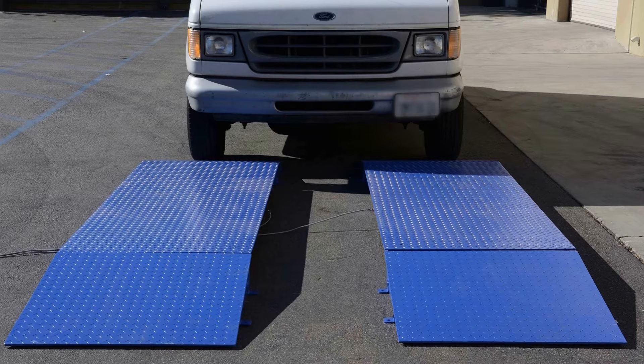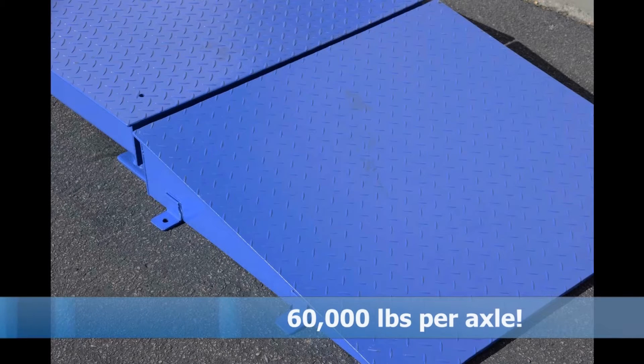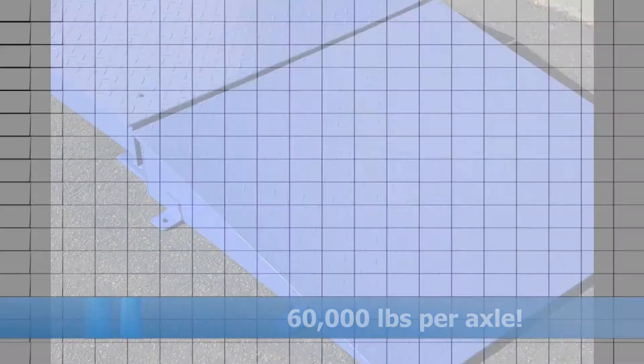The Super Duty weighing bridges are built with 3/8 inch diamond cut deck plates and 1/4 inch channels. It can weigh up to 60,000 pounds for each axle.